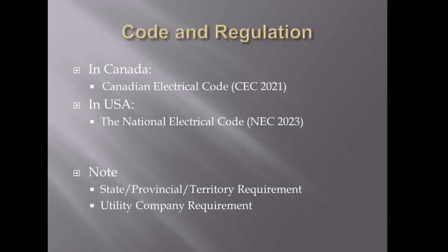So what code and regulation do we need to follow for the load calculation? In Canada, we follow the Canadian Electrical Code, the CEC 2021 version. In the United States, you should follow the National Electrical Code. You also need to check state, provincial, and territory requirements, as different provinces may require different things. Also check with the utility company to see if they have additional requirements.